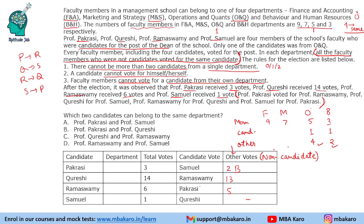Now looking at Qureshi and Ramaswamy: O&Q has 4 non-candidate votes. If we give those 4 votes to Ramaswamy, we get R's 5 non-candidate votes needing one more. Suppose F&A has no candidates, so all 9 votes go to Qureshi, and M&S has two candidates leaving 5 other votes — those 5 votes from M&S go to Ramaswamy. This is how we figure out who received votes from which department.